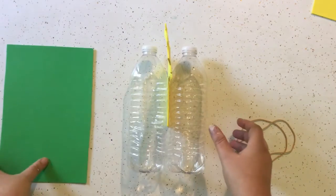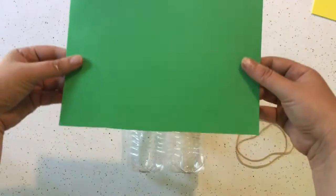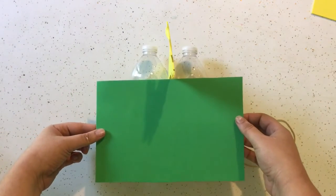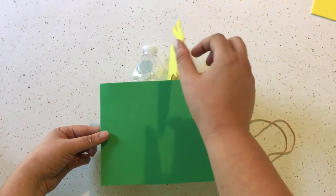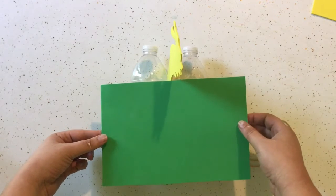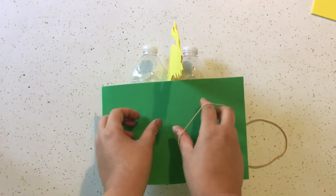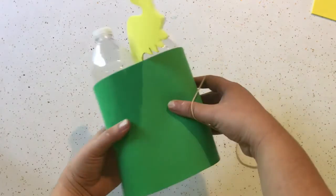Then you are going to take this piece of foam and set it on top of the bottles. It'll be right behind the dragon head. And then all you have to do is take your rubber bands and wrap them around.